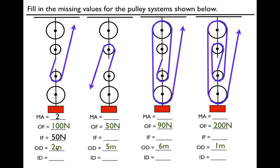We want to raise the object two meters — that's the output distance. How far do we have to pull this string? We have two strings — it's just one string that wraps around, but you can think of it as two strings. That means we have to pull twice as far, so twice as far as two is four. In order to get the input force, we took the output force and divided by two. In order to get the input distance, we took the output distance and multiplied it by two. Input force is output force divided by the MA, and the input distance is the output distance times the MA. Two strings: half as much weight on the input force, but you've got to pull twice as far.